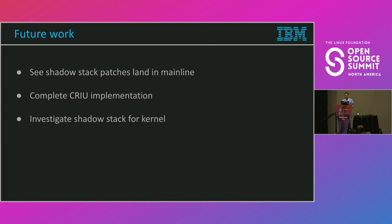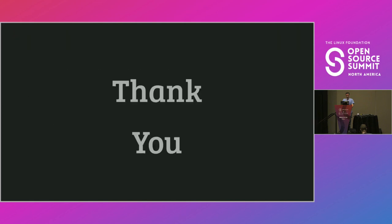It remains to be seen when and how shadow stack lands in the upstream kernel — I don't feel like the next patch set will just be accepted, so there is more work to do. Afterwards, we'll need to refine and complete the CRIU implementation. We've also started to look into how to use shadow stack hardware for the kernel itself, which looks like a lot of work and won't be easy — but we keep our hopes high. I'll post the links to CRIU and kernel patches on the Open Source Summit website.